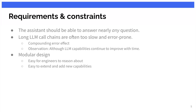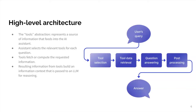Specifically, long LLM call chains suffer from a problem called the compounding error effect — when one earlier step in the chain makes an error, it feeds into the next step and is multiplied through across the chain, giving you a completely wrong answer at the end. We also observed that LLM capabilities continue to improve year over year at a rapid rate. Their context windows have expanded, their latencies have gone down, so they are really becoming capable of handling a large amount of information in one API call. We also wanted a modular design so engineers can reason about the AI interactions easily and extend it by adding new capabilities over time.